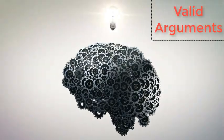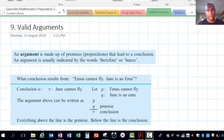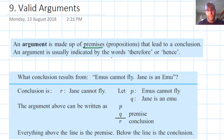An argument is defined as being made up of premises, sometimes called propositions, which lead to a conclusion. Arguments are usually indicated by key words like therefore and hence.